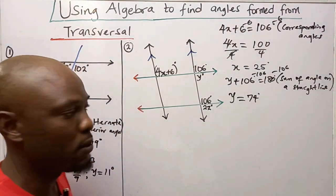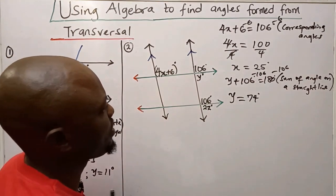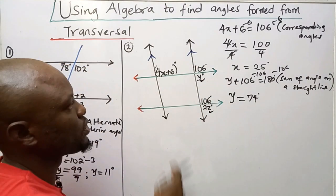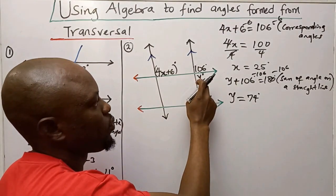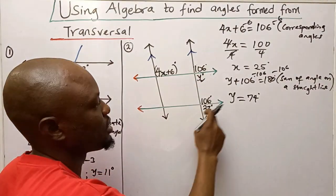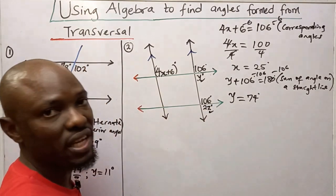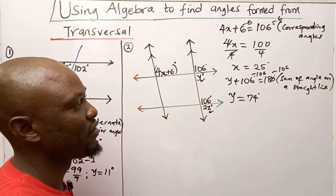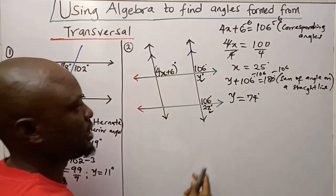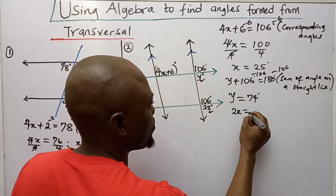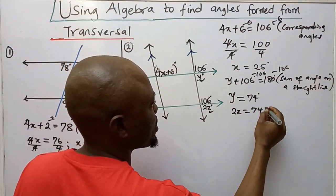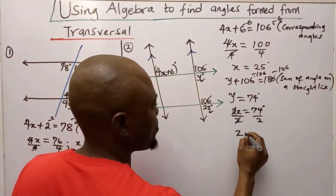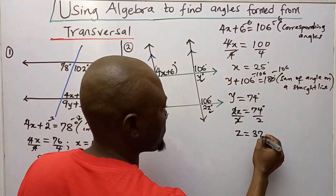Now I want to get Z. Y is at the bottom of the first parallel line and 2Z is at the bottom of the second parallel line, so they are in the same position — they are corresponding angles and congruent. So 2Z equals 74 degrees. Dividing both sides by 2, Z equals 37 degrees.